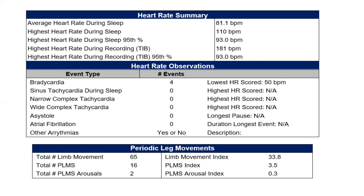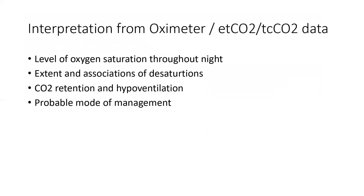This data on average heart rate, highest heart rate, bradycardias, and other arrhythmias present during sleep, along with the leg movement index — the PLM index — is presented in the summary. This helps us understand the cardiac dynamics, how cardiac rhythmicity was throughout the study, and what the leg EMG showed during the entire course of the sleep study.